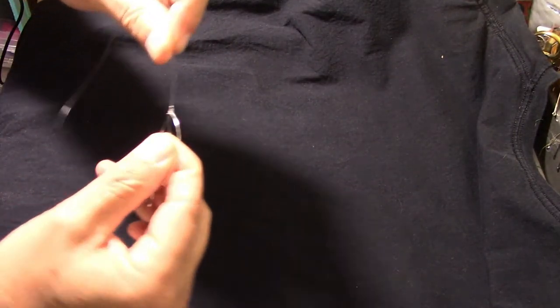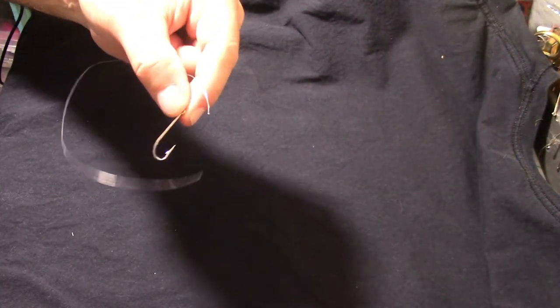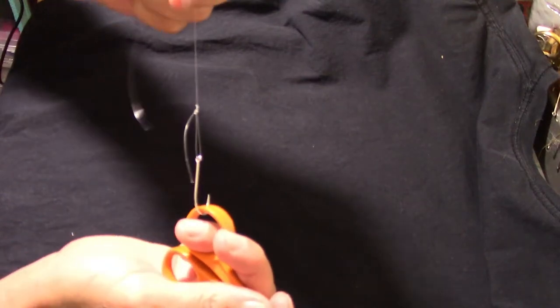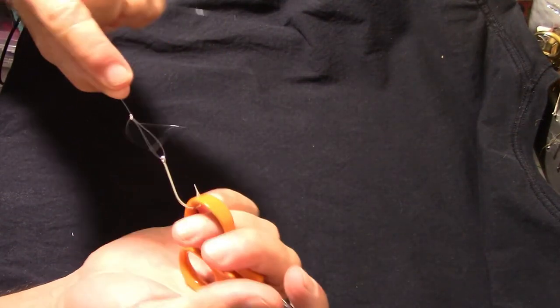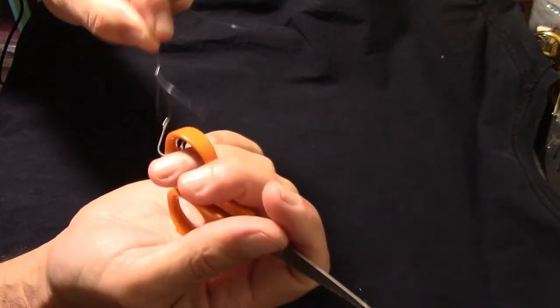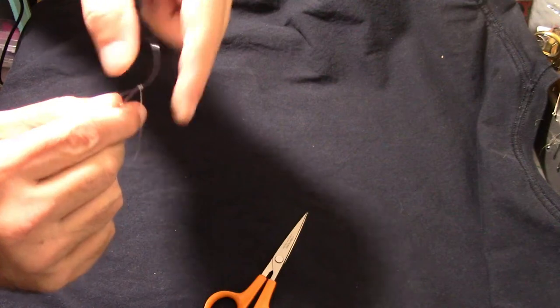Grab it with my teeth and pull it tight. I usually use my pliers but anything that you can pull it tight with. Like that, and that gives you the loop. If you did it right, the tag end will come off at a right angle like that.